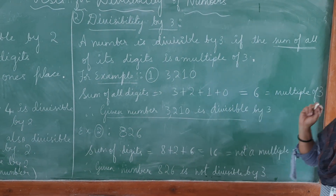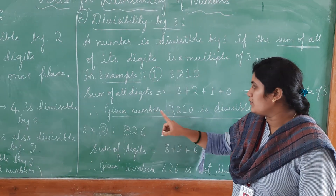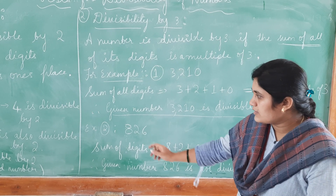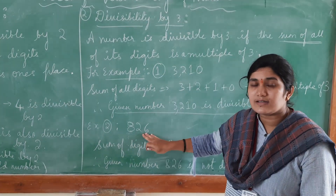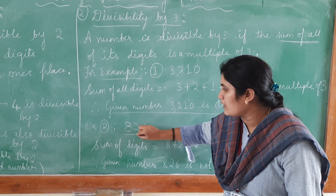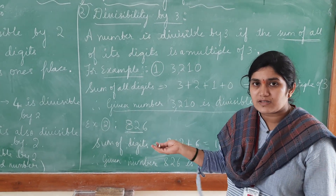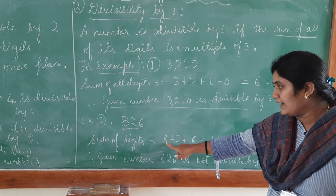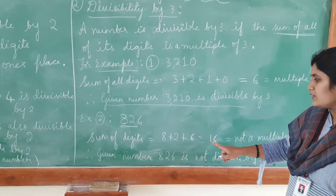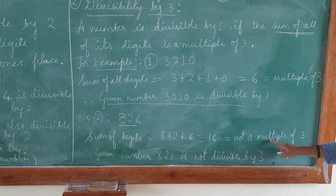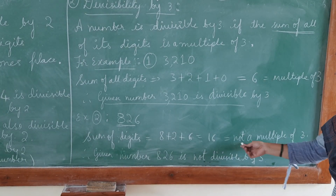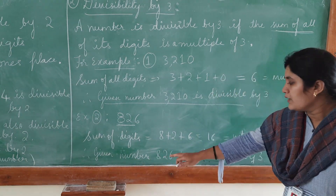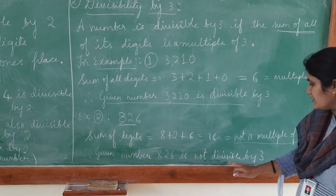Now let us see the next example. We are testing divisibility by 3 for the number 826. The sum of the digits is 8 plus 2 plus 6, which gives 16. 16 is not a multiple of 3 because 16 does not appear in the list of multiples of 3. Therefore, the given number 826 is not divisible by 3.